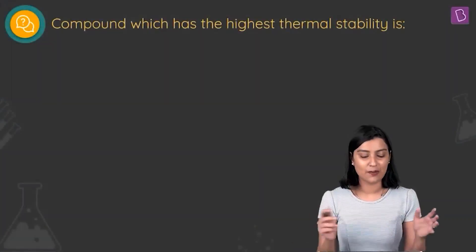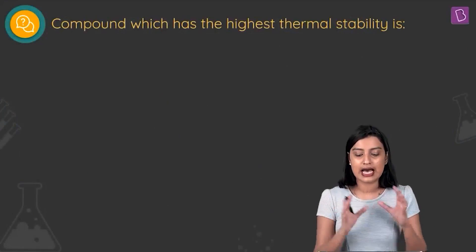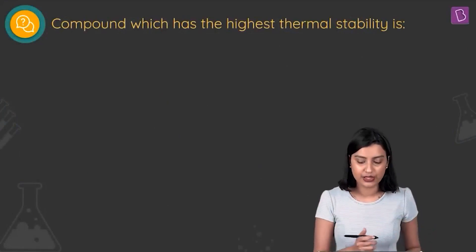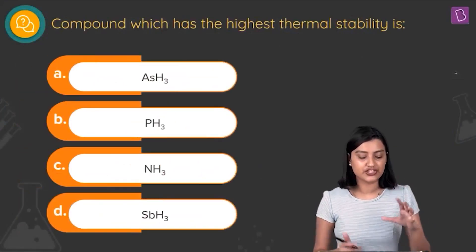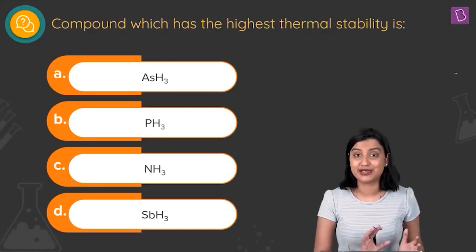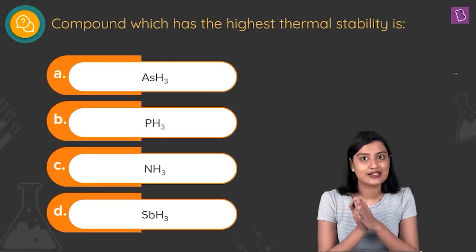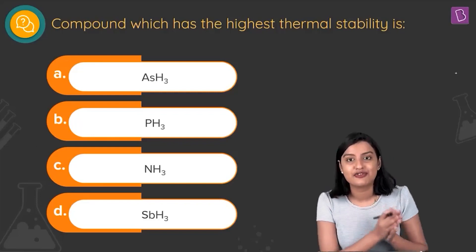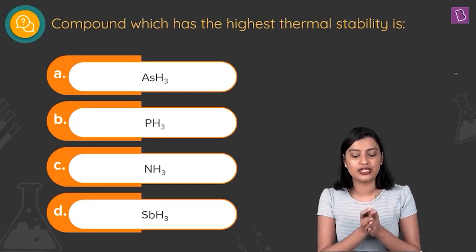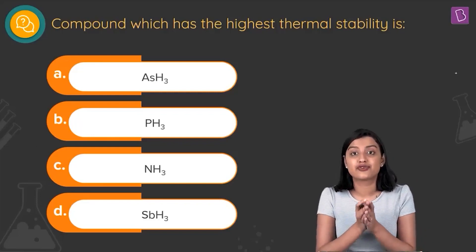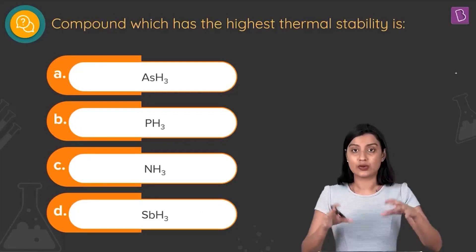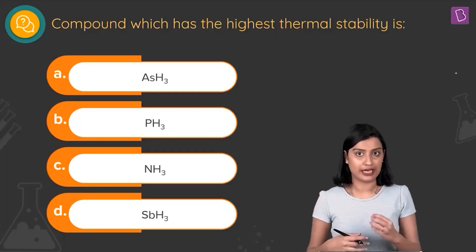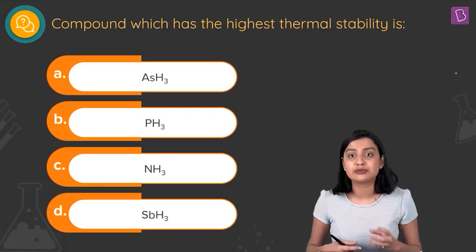The next question asks: which compound has the highest thermal stability? The options are AsH3, PH3, NH3, and SbH3 — these are hydrides of group 15 elements. We are talking about the thermal stability of group 15 hydrides, which are covalent in nature since they are p-block hydrides.